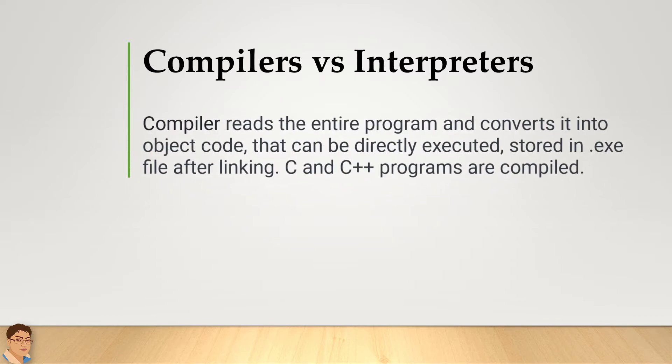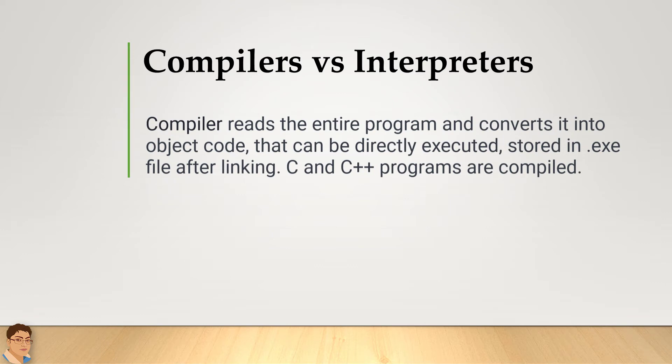A compiler reads the entire program and converts it into object code that can be directly executed by the computer. The object code is also referred to as binary code or machine code and typically stored in an executable .exe file or something similar, after linking. Programs written in C and C++ are compiled.